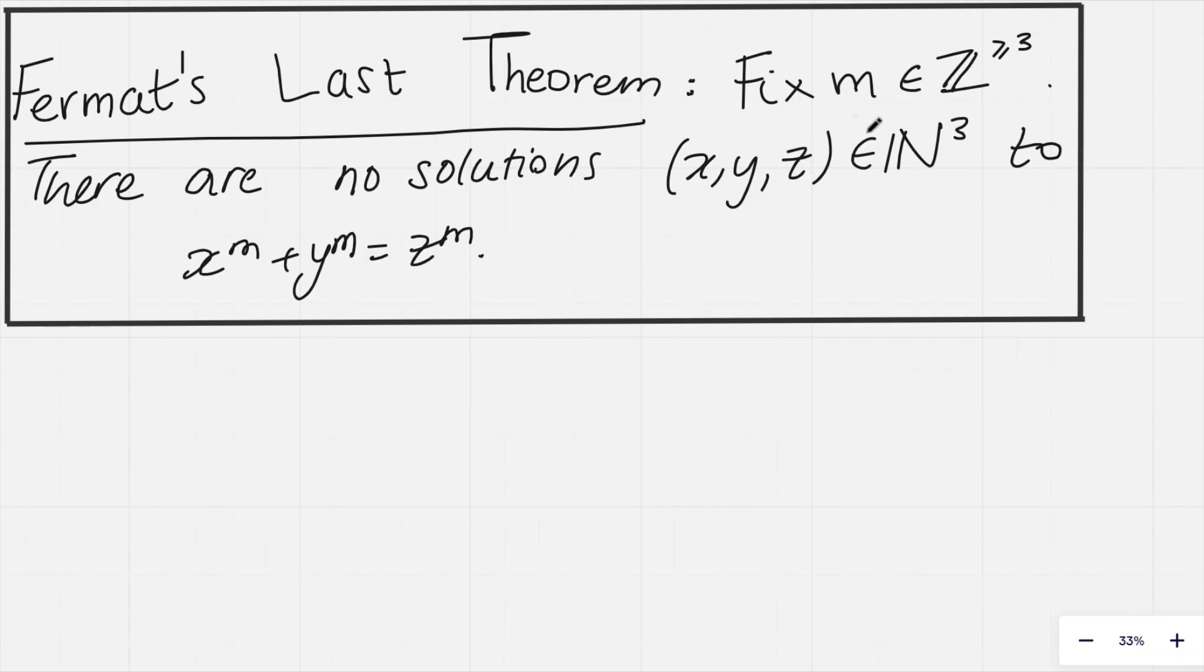If we have a positive integer m, which is at least 3, then there are no integer solutions where x, y, z are positive integers to this equation here: x to the power of m plus y to the power of m equals z to the power of m.